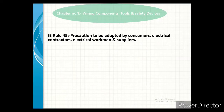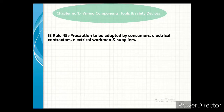Our next rule is Indian Electricity Rules 45, precaution to be adopted by consumer, electric contractor, electrical workmen, and supplier. This rule tells us that no electrical installation work shall be connected to the supply of any supplier if it violates sub-rules. That means you must not violate any sub-rules of Indian electricity rules — you must follow all safety rules.